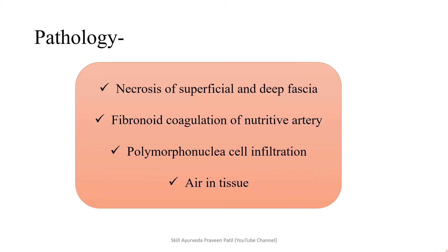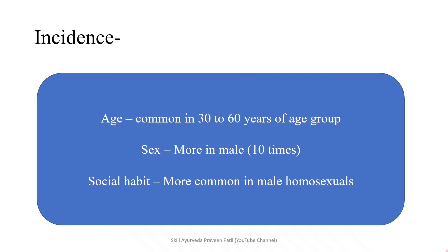Pathology: there is necrosis of the superficial and deep fascia, fibrinoid coagulation of nutrient arteries, polymorphonuclear cell infiltration, and air in the tissue. This air accumulation inside the tissue produces crepitations on examination. Regarding incidence, it is commonly seen in the 30 to 60 year age group, and it is 10 times more common in males compared to females. It is also more common in male homosexuals, where there is repeated trauma to the anorectal region.